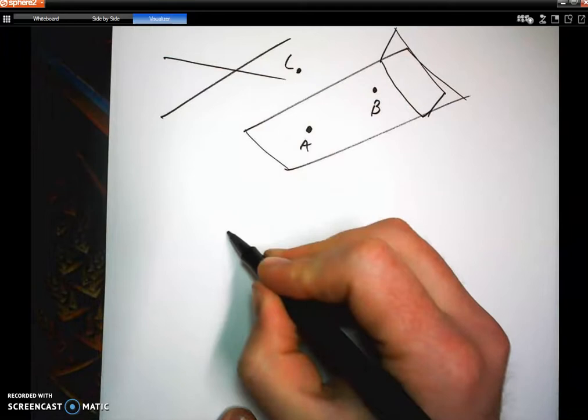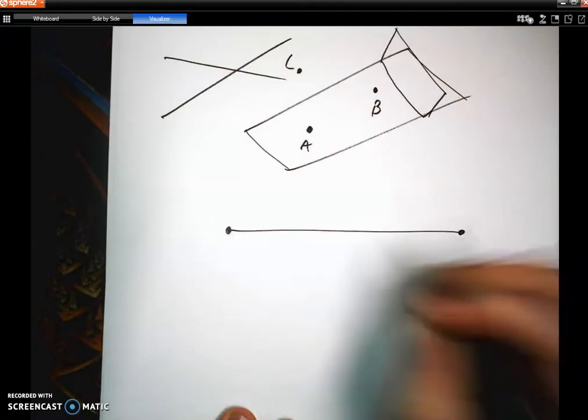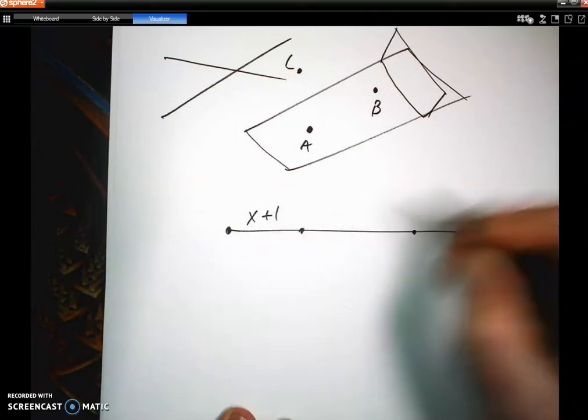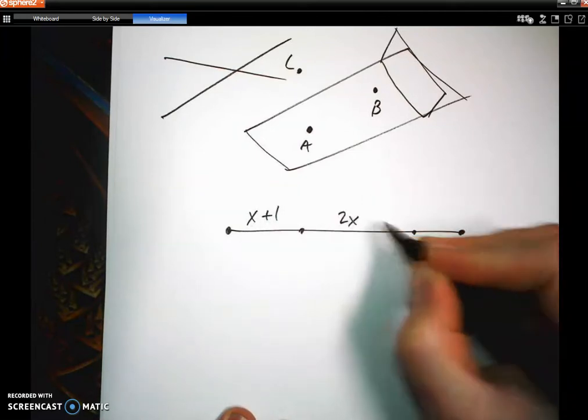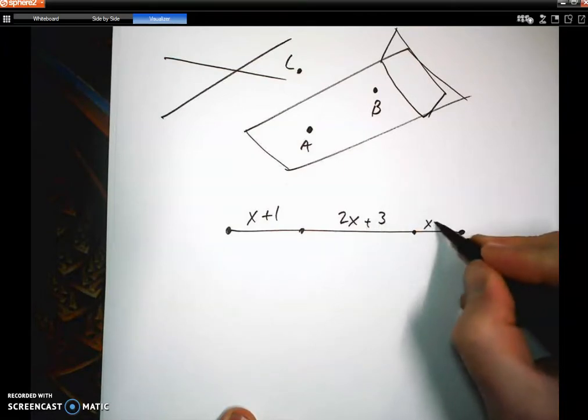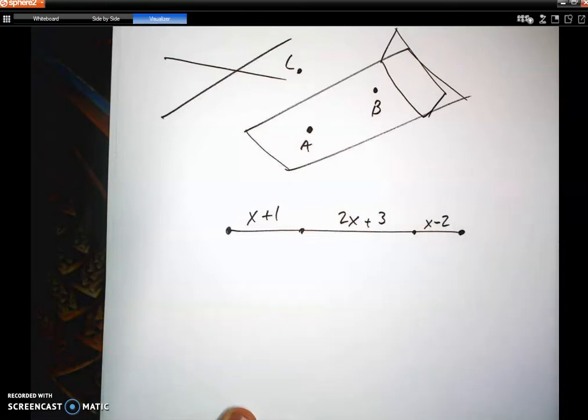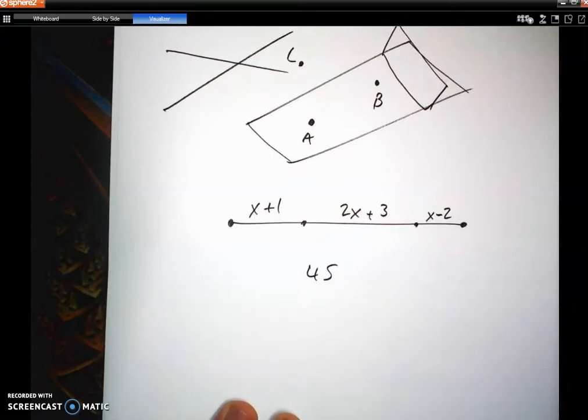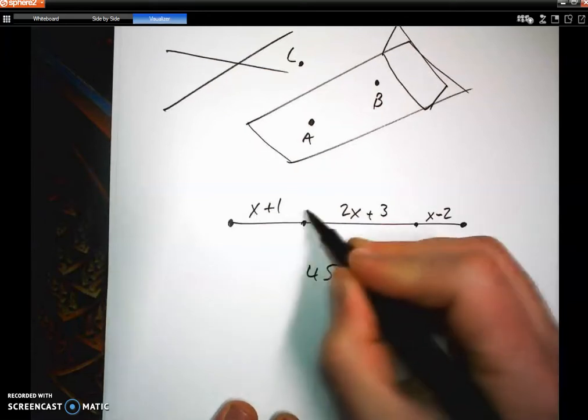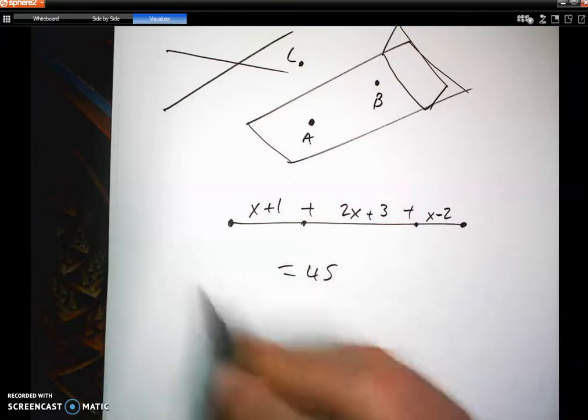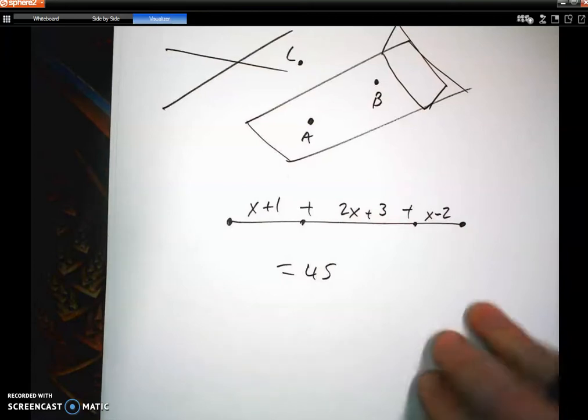And then going along those lines, the segment addition postulate saying, if this whole section here is like x plus one, and this is double x plus three, and this right here is x minus two, and you know that this entire length here is 45. Can you write an equation where you take all of these and add them up and make them equal 45 and figure out what x is to find out what each space should be? Just different things like that.